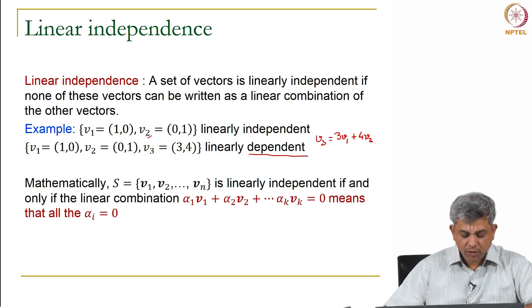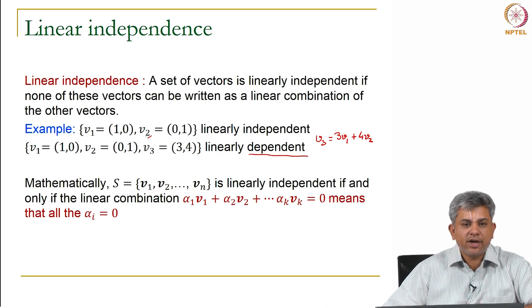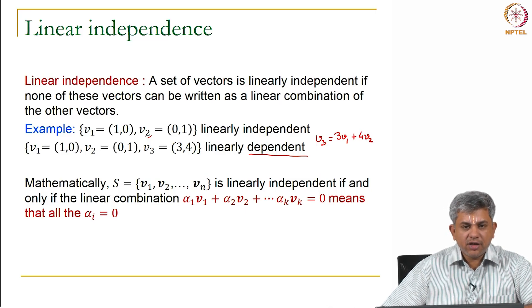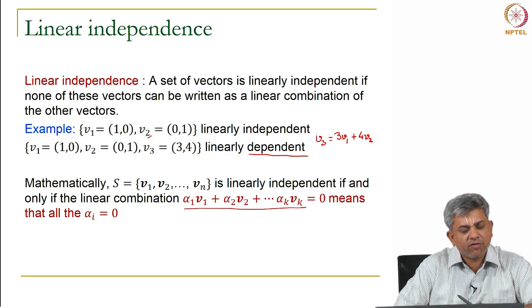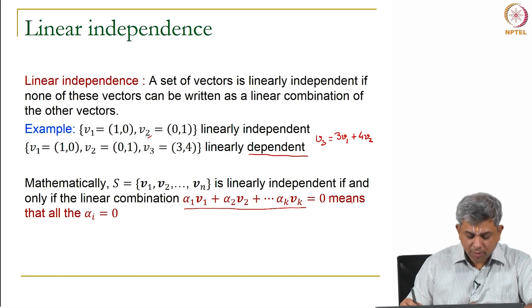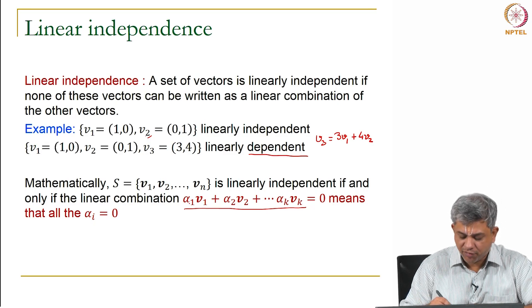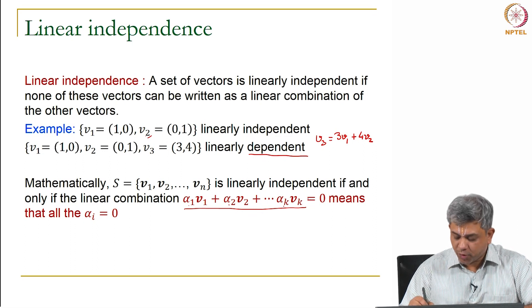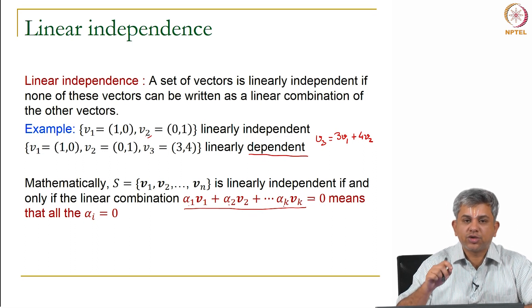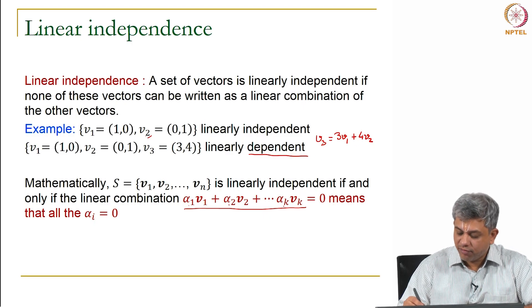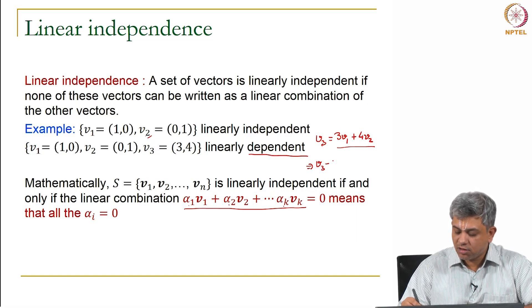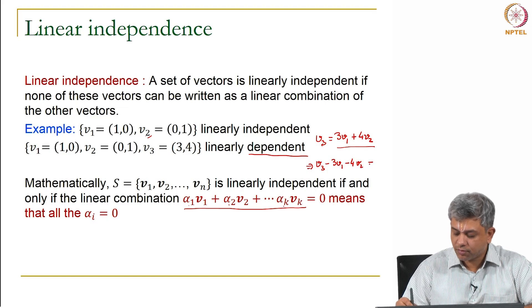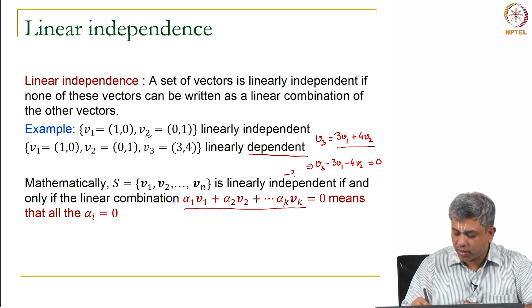Mathematically, we say that any set V1 through VN is linearly independent if and only if the linear combination α1·V1 + α2·V2 + ... + αK·VK for any K equals 0 automatically implies that there is only one possibility. Notice that if I set α1, α2, ..., αK equal to 0, obviously I'm going to get 0. But that should be the only solution to this system of equations. Notice here, if V3 = 3V1 + 4V2, it automatically means V3 - 3V1 - 4V2 = 0.